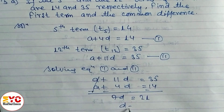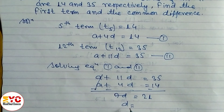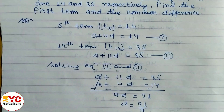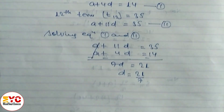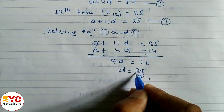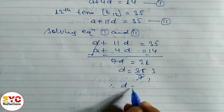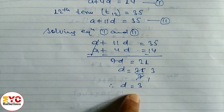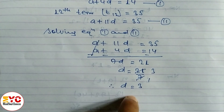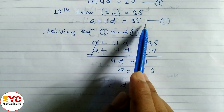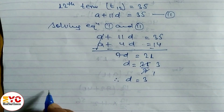So D is equal to 21 divided by 7, which gives D equals 3. After finding the value of D, we have to put the value of D either in equation 1 or equation 2 to get the value of A.